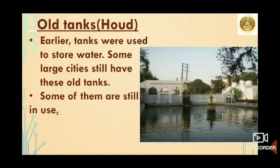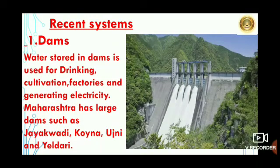The next is old tanks, also called hound. Earlier, tanks were used to store water. Some large cities still have these old tanks, and some of them are still in use. Till now we have seen old water stores. Now we will see the recent system of water stores.